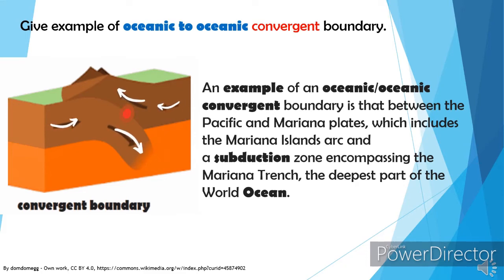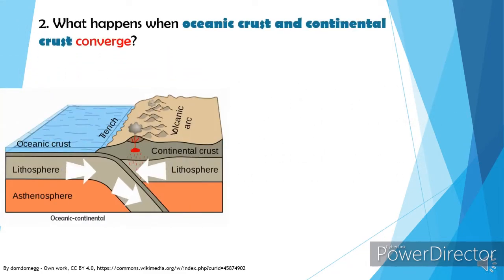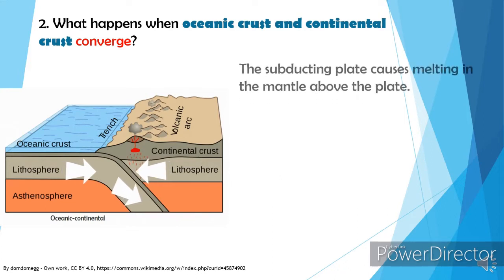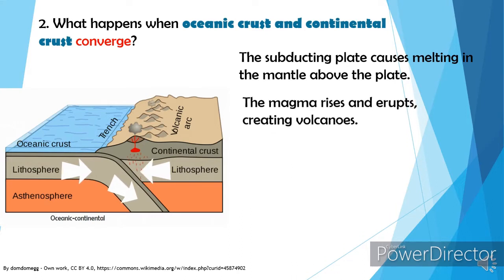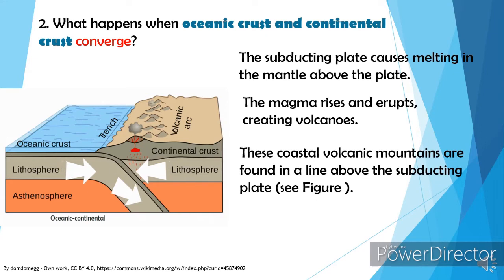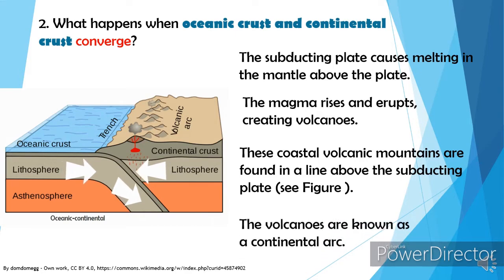What happens when oceanic crust and continental crust converge? The subducting plate causes melting in the mantle above the plate. The magma rises and erupts, creating volcanoes. These coastal volcanic mountains are found in a line above the subducting plate. The volcanoes are known as a continental arc.